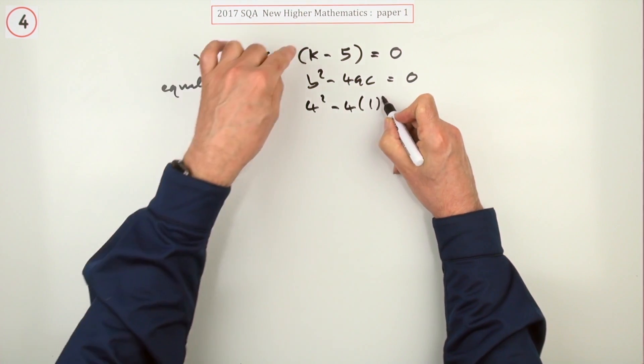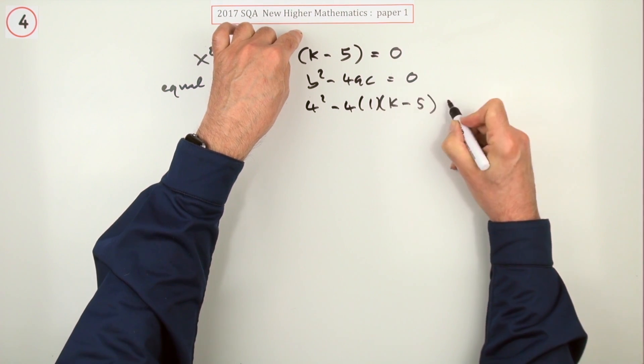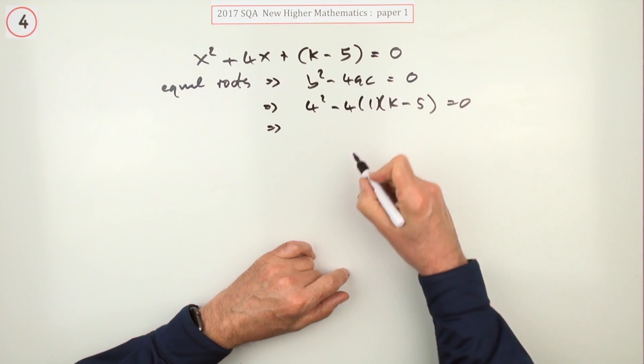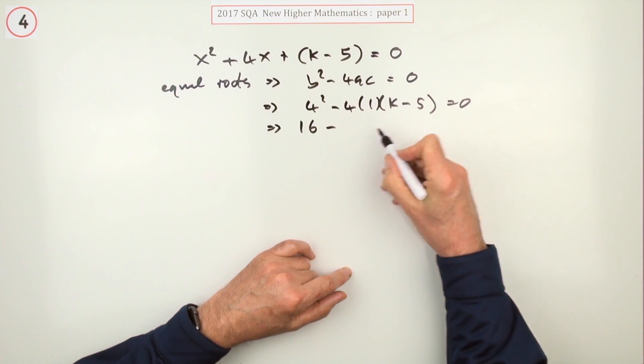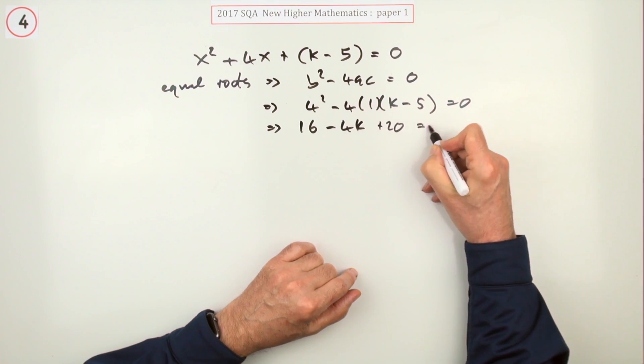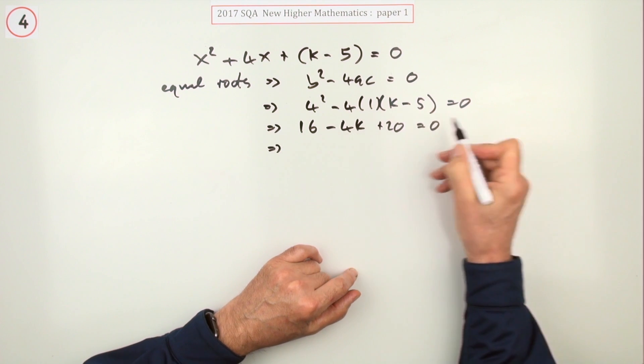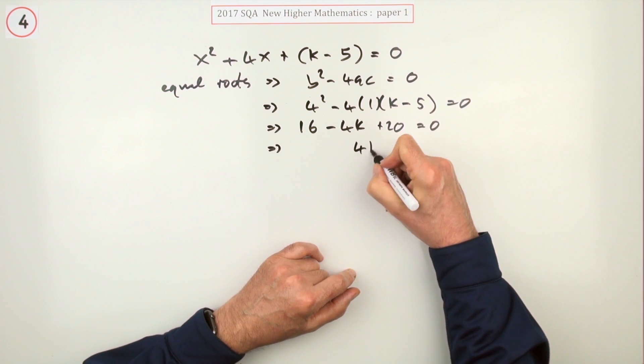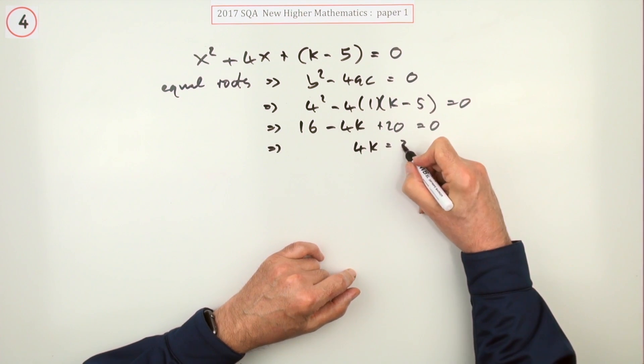In which case, b² (that's 4²) minus 4 times 1 times (k minus 5) should equal zero. So that's 16 minus 4k plus 20 equals zero. I'll just take that over and read it as 4k equals 36.